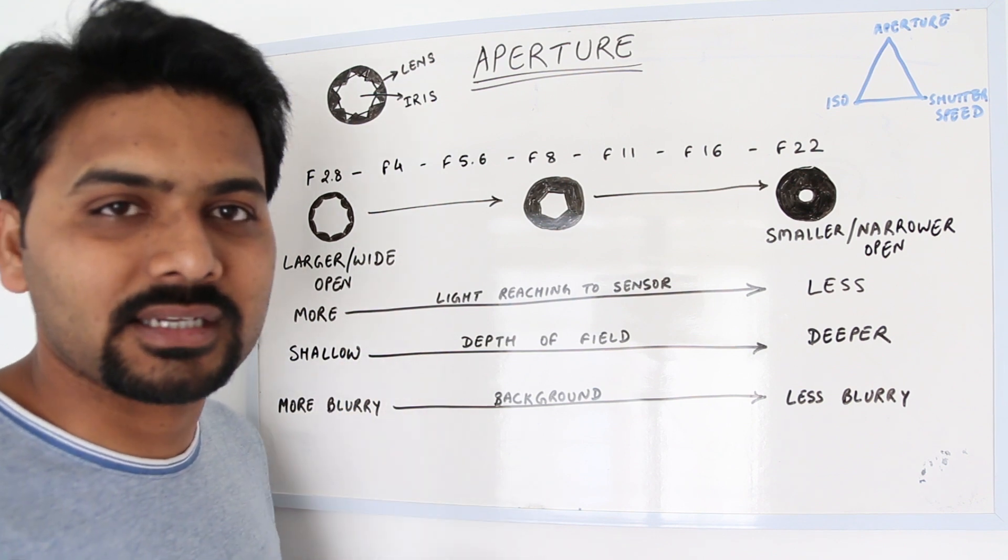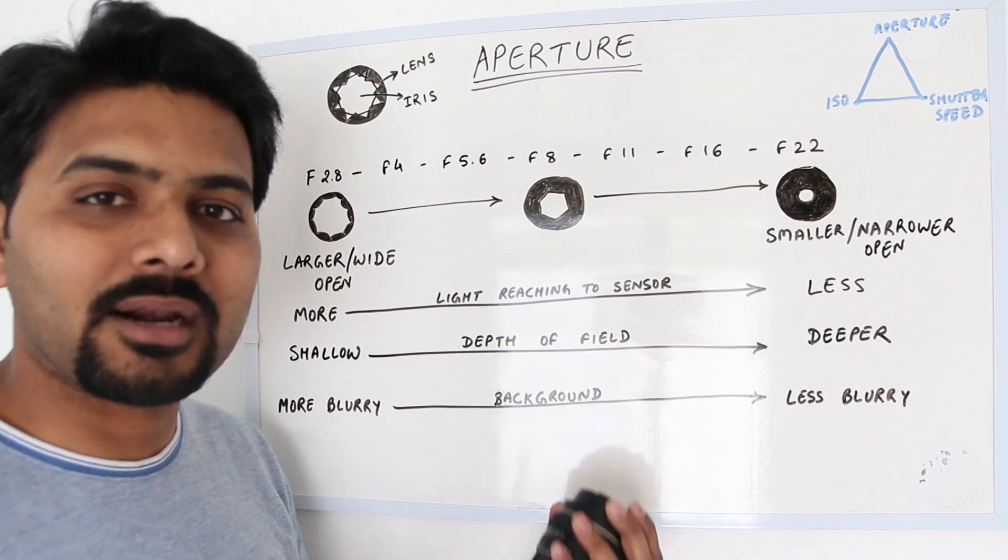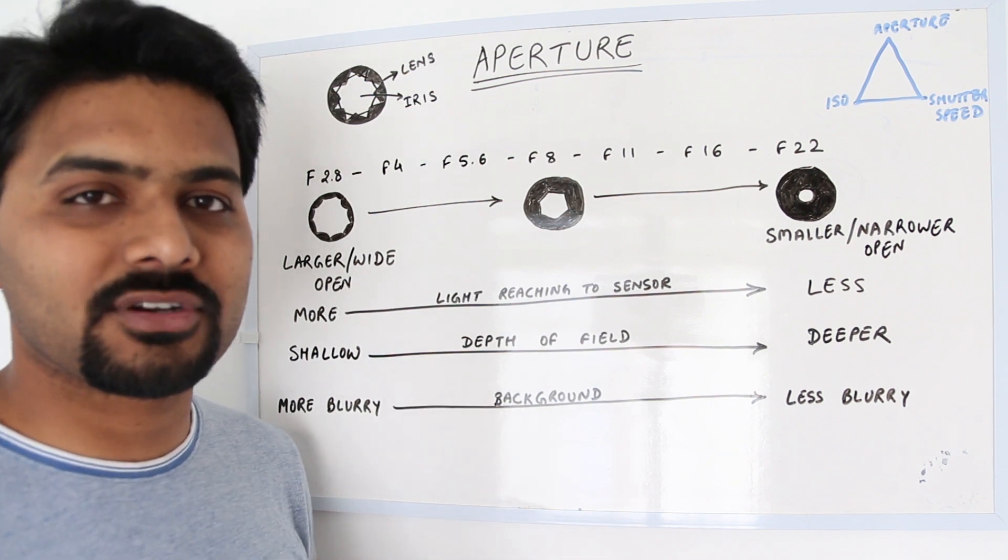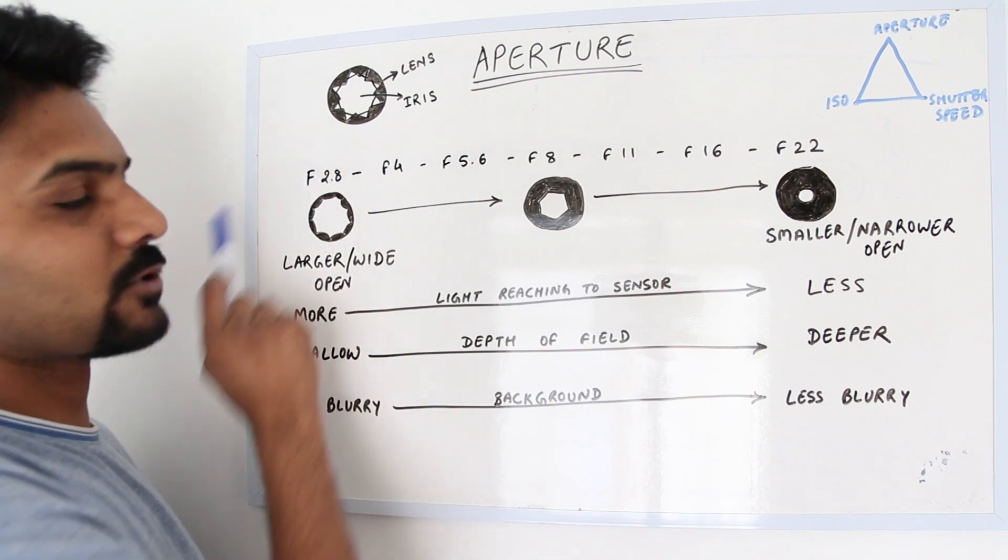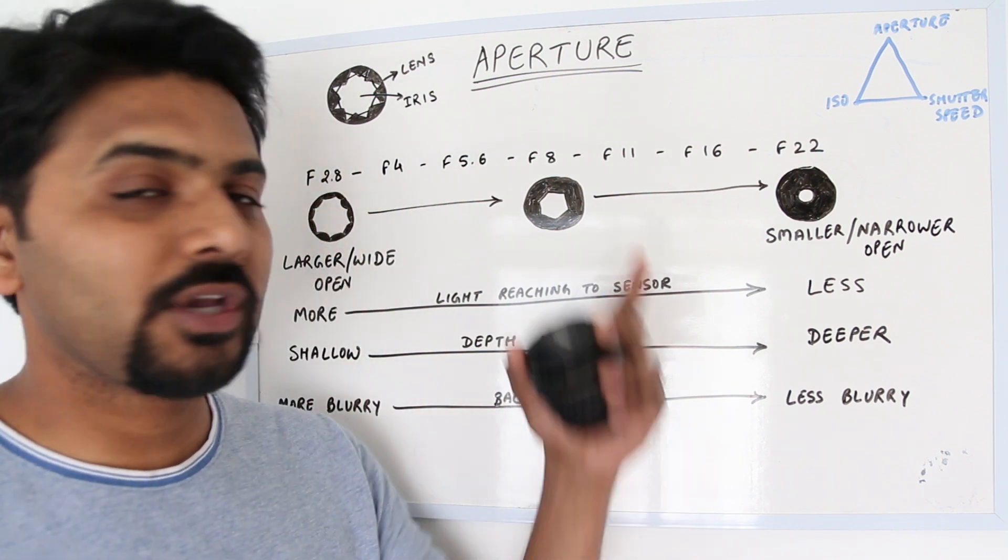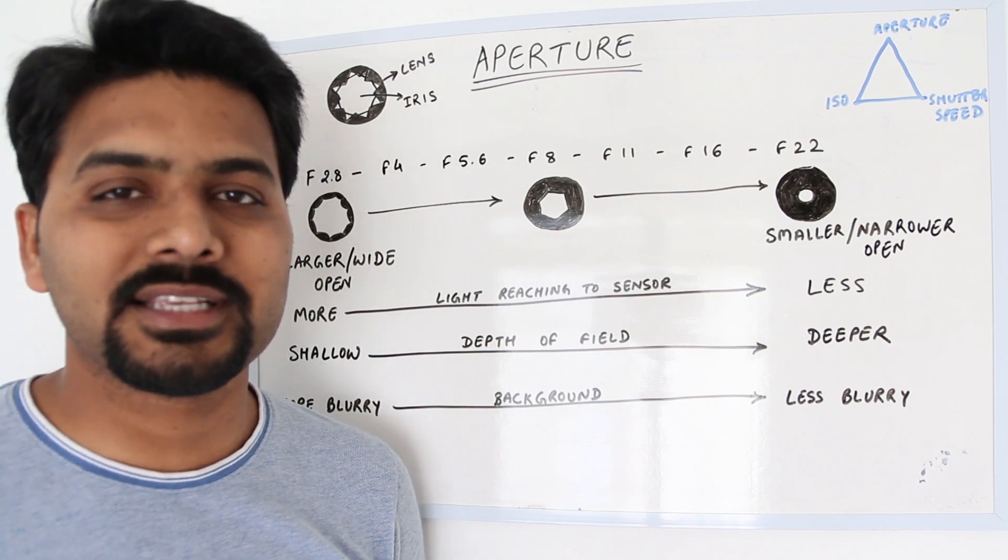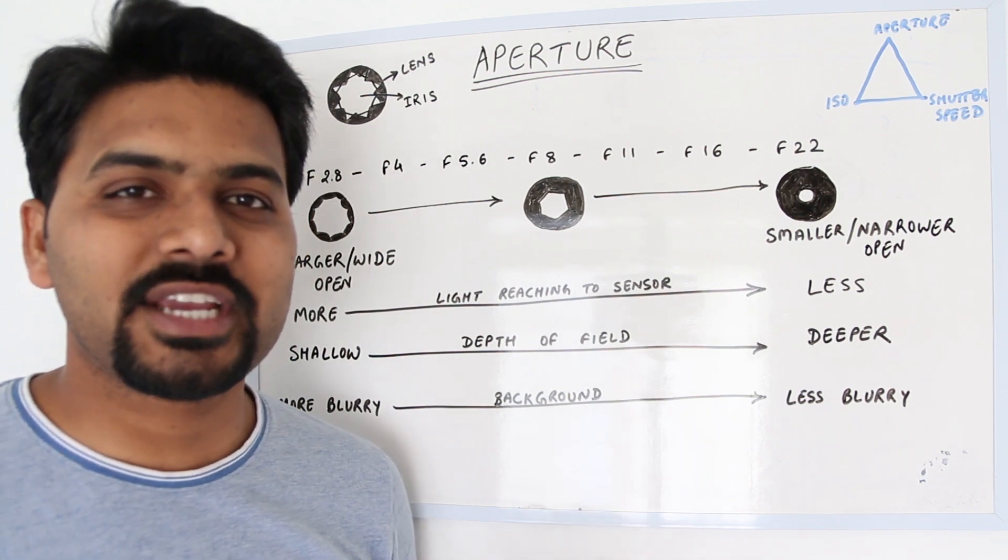Next time you're planning to buy a lens, make sure you buy one with the highest aperture or lowest f-stop number. I hope you enjoyed this video about aperture. The next video will be about shutter speed, so don't forget to check that out.